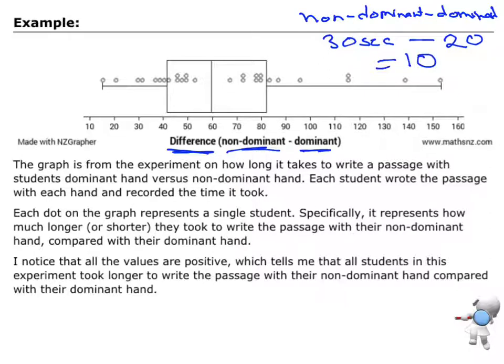So then I'd go to my dot plot here, and I would draw a dot at 10 to represent the difference for that student. And that's what we do with every single student. We choose another student, look at their time for each, the dominant and non-dominant, subtract them.